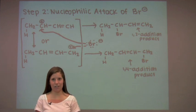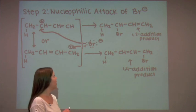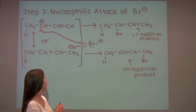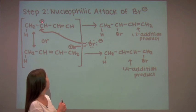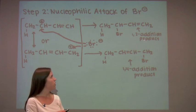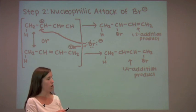The second step is the nucleophilic attack of the bromide ion on the allylic carbocation. A lone pair of electrons on the bromide anion can either attack the second carbon or the fourth carbon where a positive charge is located. If it attacks the second carbon, it will result in the 1,2 addition product, where hydrogen is bonded to the first carbon, bromine is bonded to the second carbon, and the pi bond is located in between the third and fourth carbon.